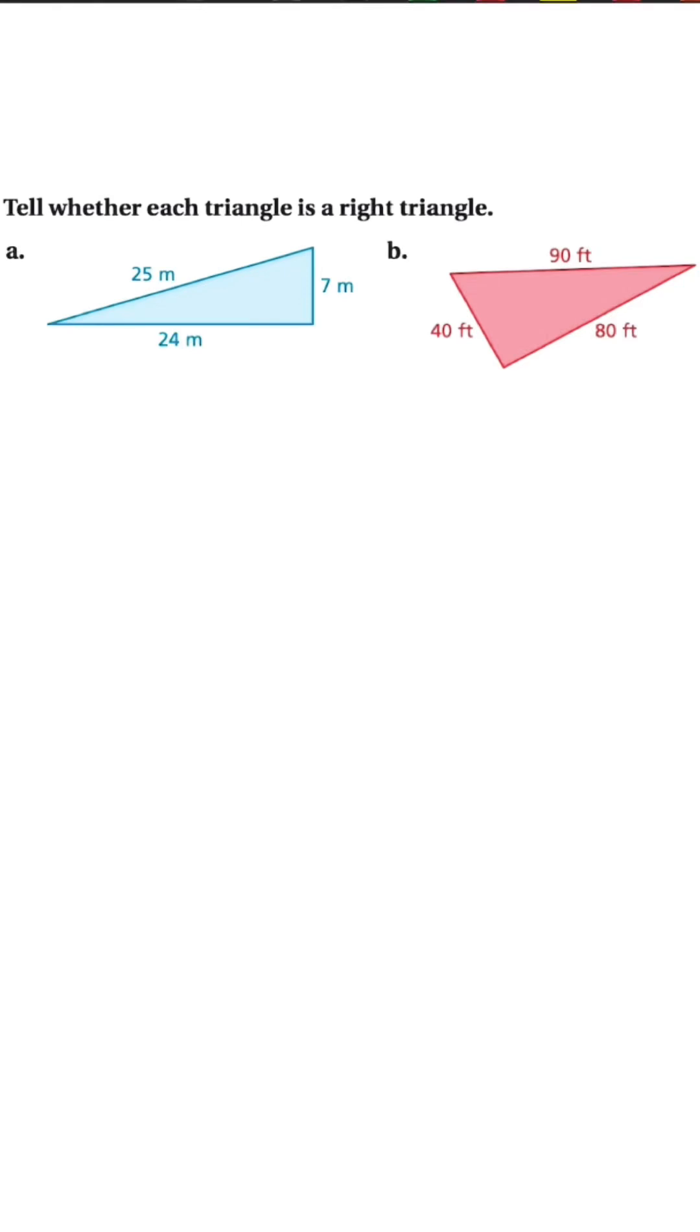We have two triangles and they want us to determine whether there are right triangles or not. This is a two-step process. Number one, we have to start off with the Pythagorean theorem, so we're talking about a squared plus b squared is equal to c squared.